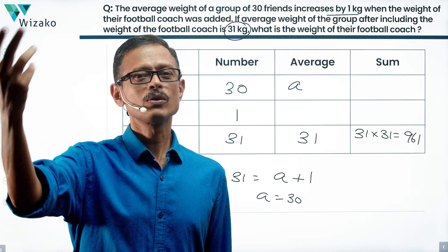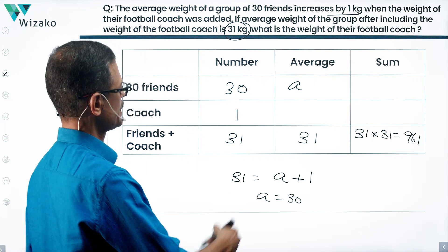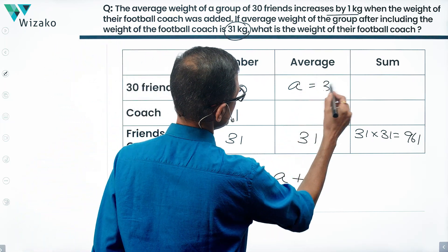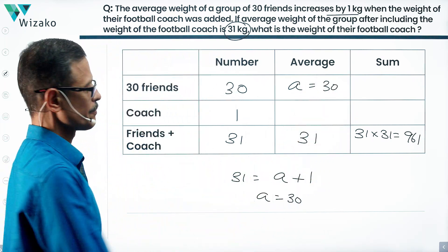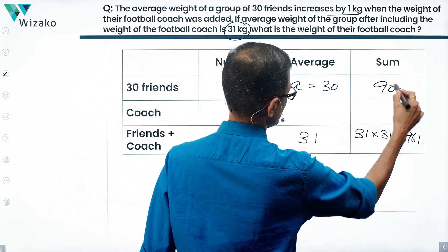Now if we remove it, 31 should go down by 1, which means it should become 30. So essentially the average weight of 30 friends is equal to 30. So sum of their weights is 30 times 30, which is equal to 900.